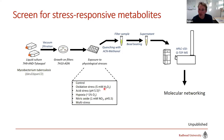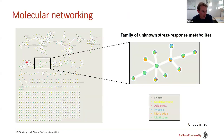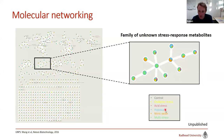We exposed MTB on filters to stresses mimicking those encountered in our lungs, beat the cells, and analyzed them on a QToF with molecular networking. In the resulting network, one sub-cluster stood out: using feature-based molecular networking, the pie charts showing relative levels across stresses revealed this cluster was most abundant under multi-stress (combined stresses), nitric oxide, or hypoxia — exactly the stress responses we were hunting. All metabolites in the cluster were unknown.